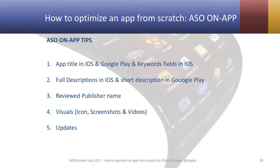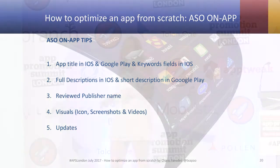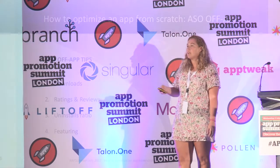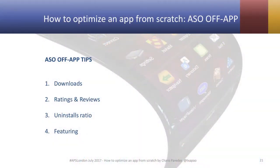Once you select your keywords from your ASO keyword research, you need to do the usual actions: ASO on-app and ASO off-app. For on-app, the usual focus is on the title, description, and so on depending on the operating system, as well as the visuals and videos. For off-app, you look at your downloads and how you respond to ratings and reviews.